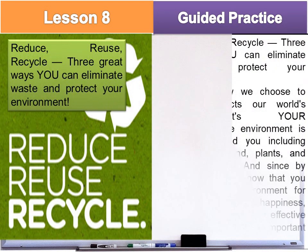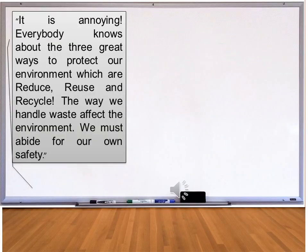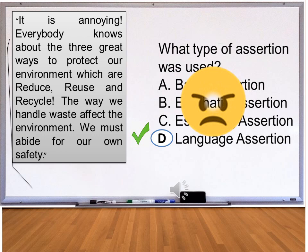Let's read the final text silently. Statement about the final text: 'It is annoying. Everybody knows about the three great ways to protect our environment, which are reduce, reuse, and recycle. The way we handle waste affects the environment. We must abide for our own safety.' What type of assertion was used? A. Basic, B. Emphatic, C. Escalating, D. Language. The answer is letter D — Language Assertion. The reader's feeling was angry. The reader was annoyed at those who don't follow the three R's that can protect the environment.